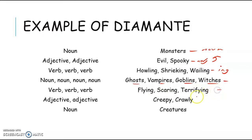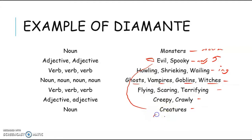And lastly, we have another noun. This noun means the same thing as the first word in our Diamante — monsters. So another word for monsters is creatures. This is the synonym for monster. This Diamante is a good practice to enrich your vocabulary. By writing Diamante, you will be required to look for words that are associated with the topic of your poem.